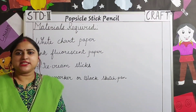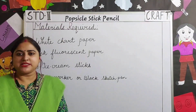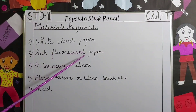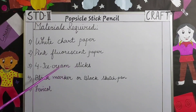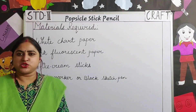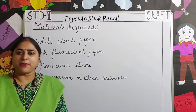Now children, let's see the materials required to make a popsicle stick pencil. Number one: white chart paper. Number two: pink fluorescent paper. Number three: four ice cream sticks. Number four: black marker, or you can also use a black sketch pen. Number five: fevicol. So these are the materials required to make a popsicle stick pencil.